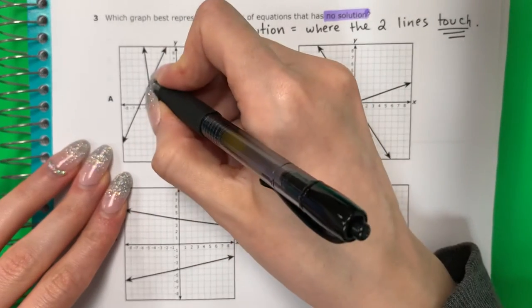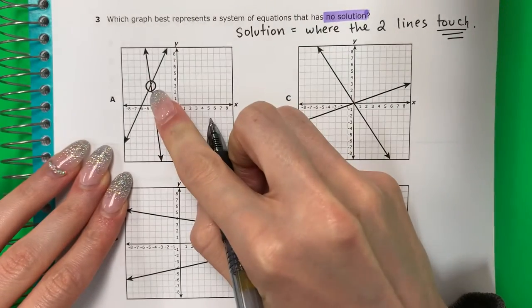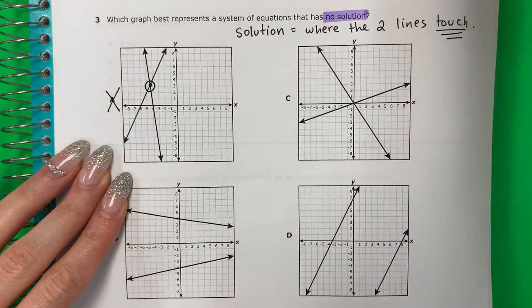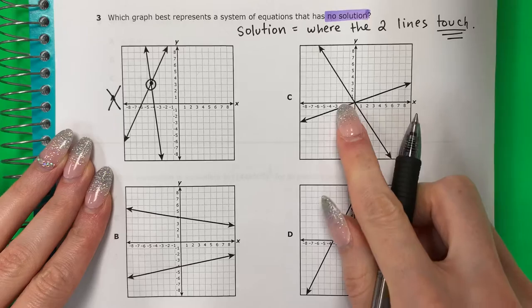So here there is a solution. Aquí hay una solución. Okay, it's right there. And I don't want that. No quiero eso. I want without a touch. Quiero sin toca. Okay, let's take a look at this one.